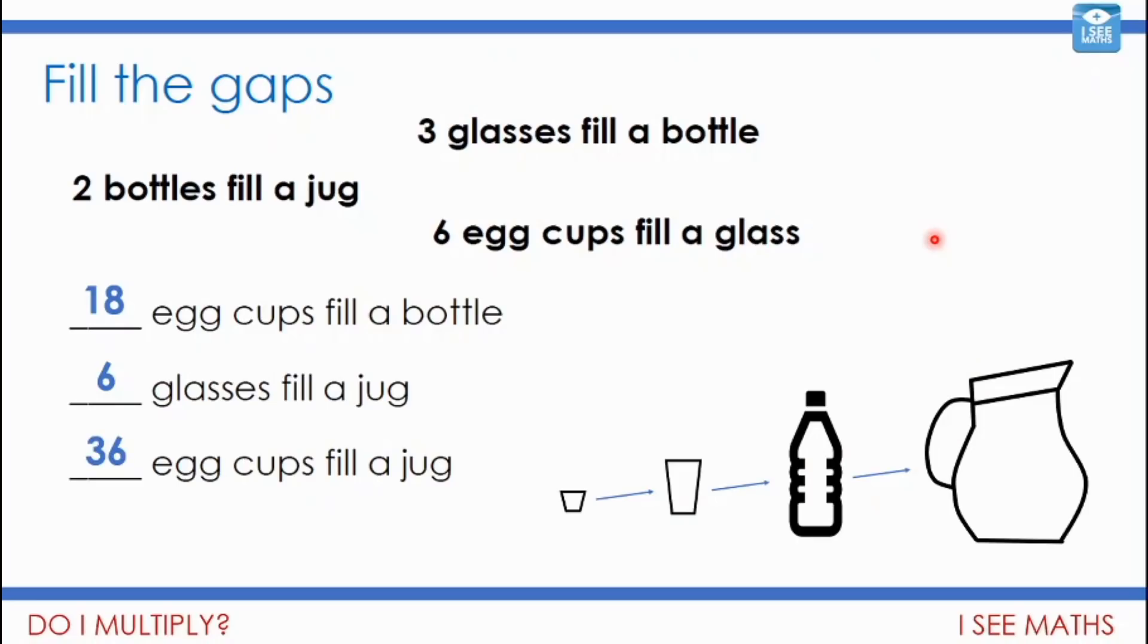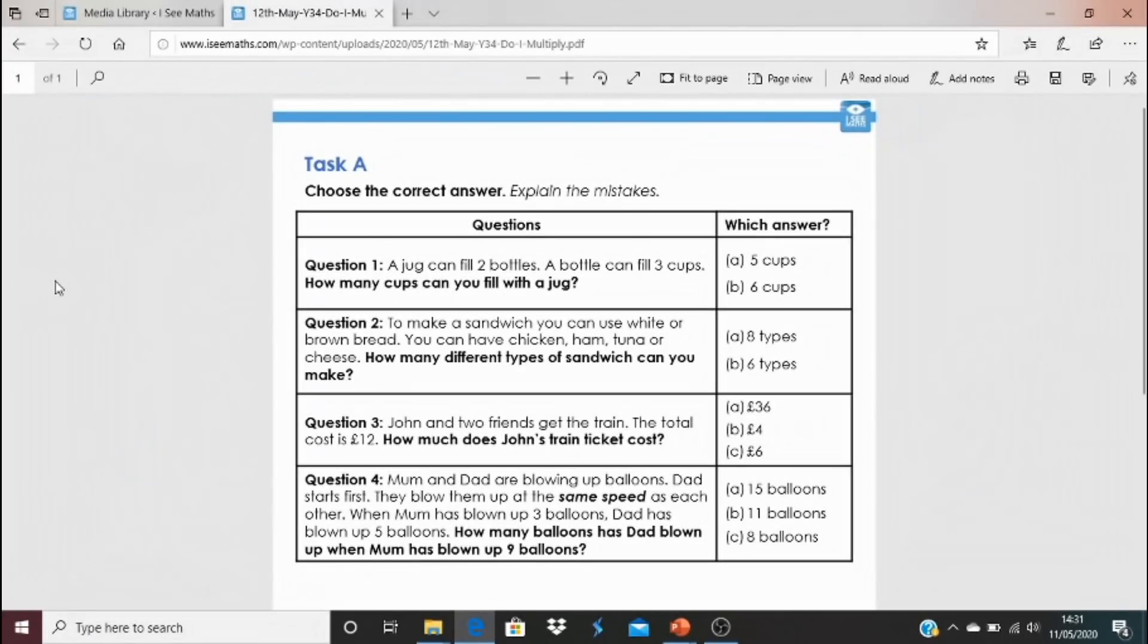And can you see, this one is a scaling up type of multiplication. So we've seen multiplication here, but in all kinds of different situations. Again, such an important mathematical skill is being able to read a worded question and think, well, what am I supposed to do here? Which operation is this? And that's the focus for today.